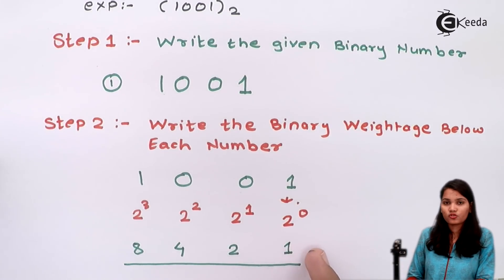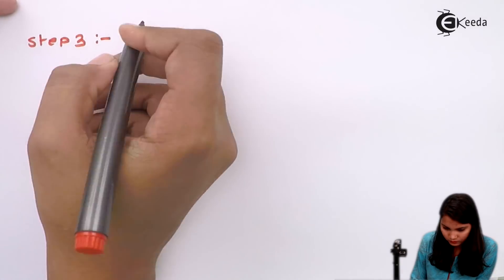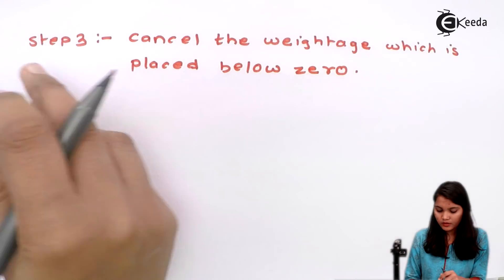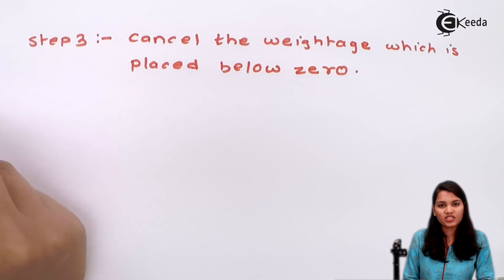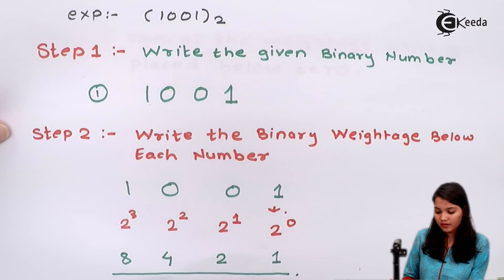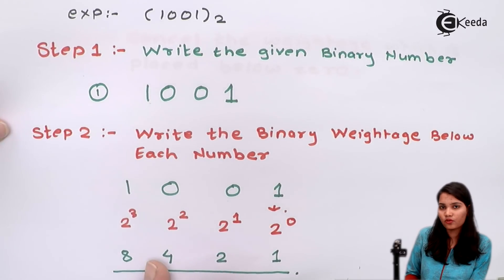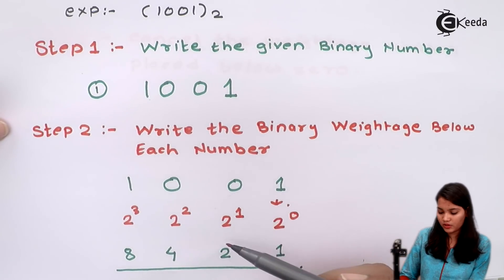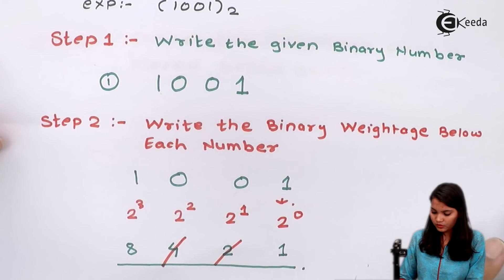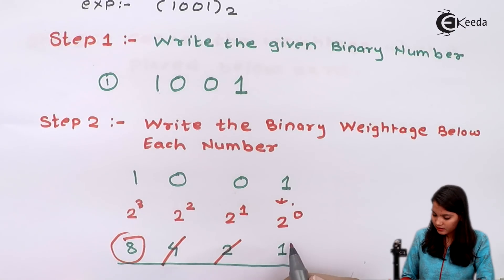In the next step we add these binary weightages to get the decimal number. The third step is to cancel out the weightages that are placed below the binary digit 0. In our example there are two 0s, so we cancel out the weightages below those 0s — that means 2 and 4 are cancelled. The remaining weightages are 8 and 1.